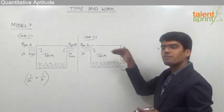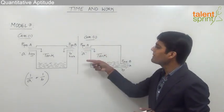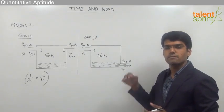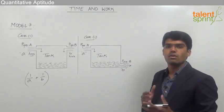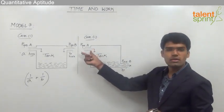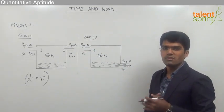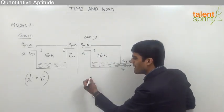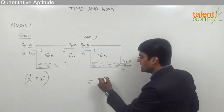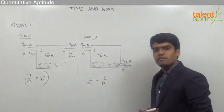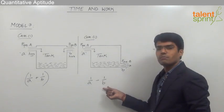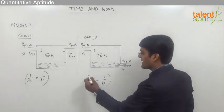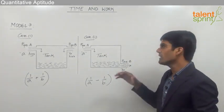Our job is to fill the tank, so pipe A is doing the correct work, but pipe B is removing water — it is doing the opposite or negative work. So A does positive work and B does negative work. The work done by pipe A in one hour is 1/A, and by pipe B is 1/B, but we take a negative sign for B. So 1/A − 1/B is the total work done by both pipes together in one hour, and we take the inverse of this to find the total time required to fill the tank.